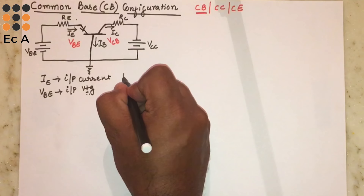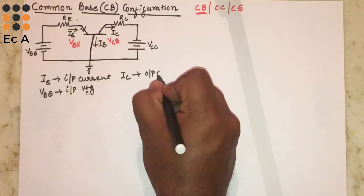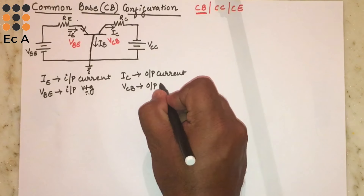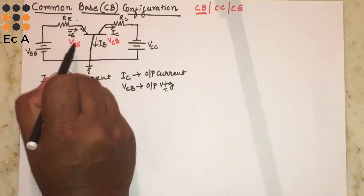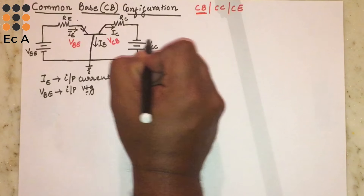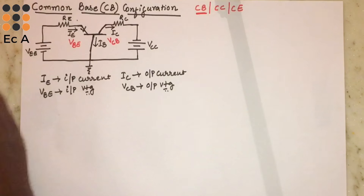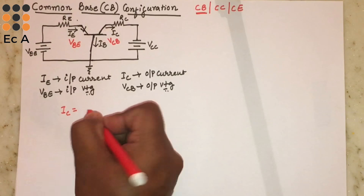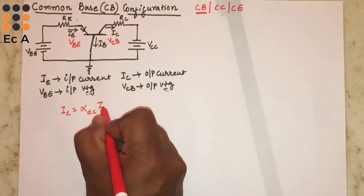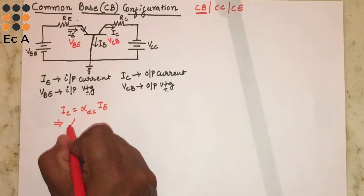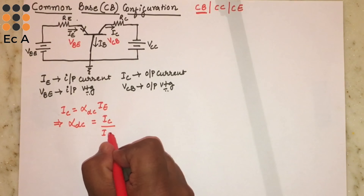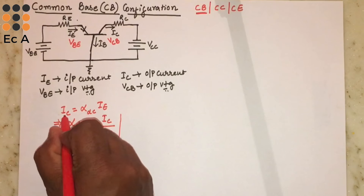Now let us ground the base. This is the circuit connection for common base configuration. In this circuit, IE is the input current, VBE is the input voltage, IC is the output current, and VCB is the output voltage. From the input side we give the weak signal and at the output side we obtain the amplified signal. The output side is towards the collector and the input side is towards the emitter terminal.